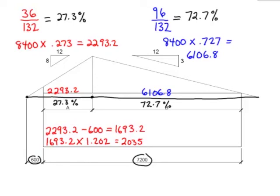So that tells me that this distance here is 2,035. Now, the overhang, which is 600, times 1.202 is equal to 721. Now I know where my layout will be on a rafter for my three plumb lines.